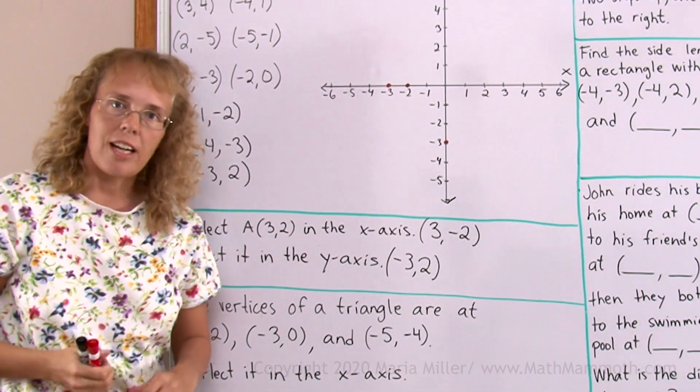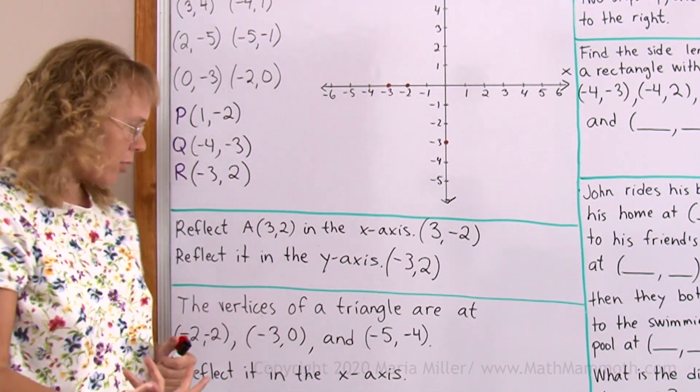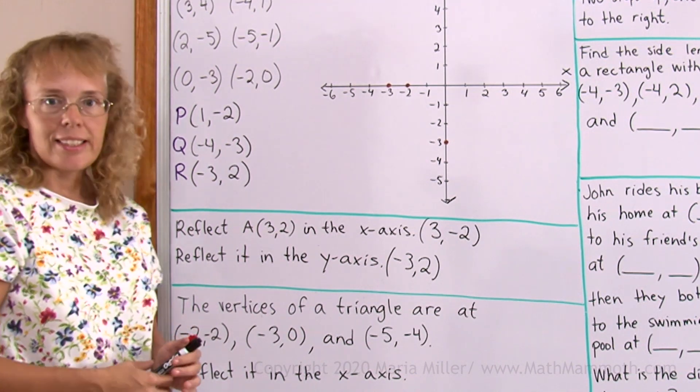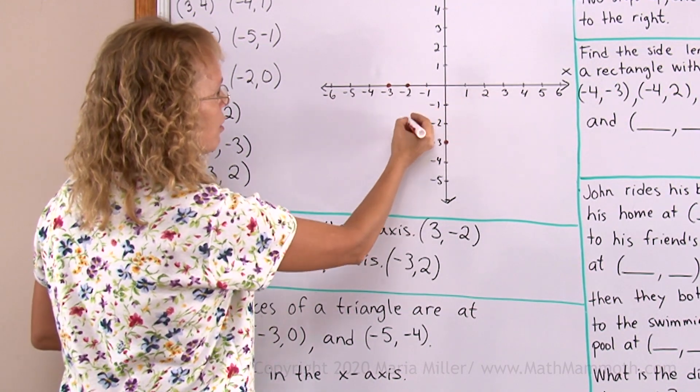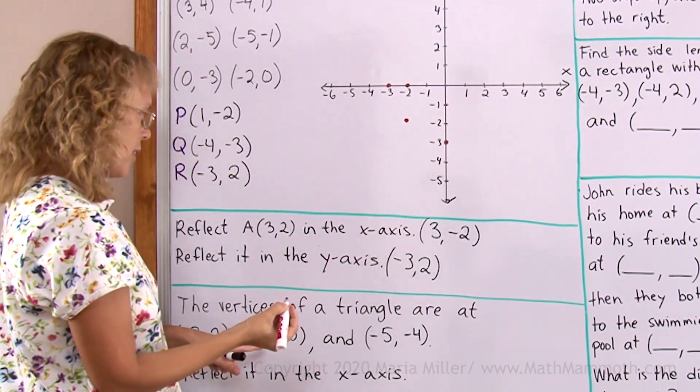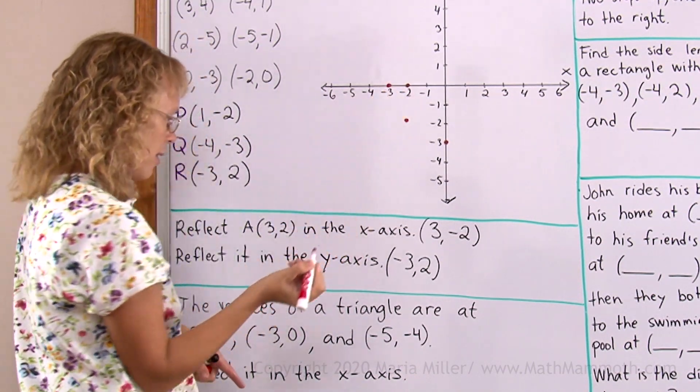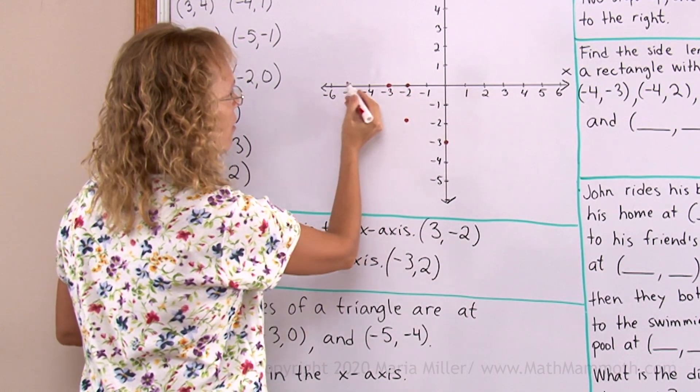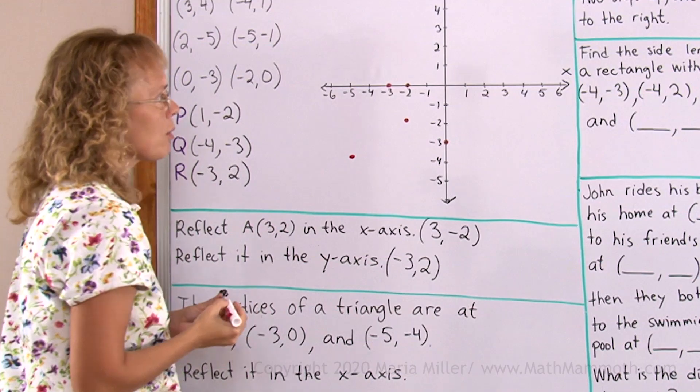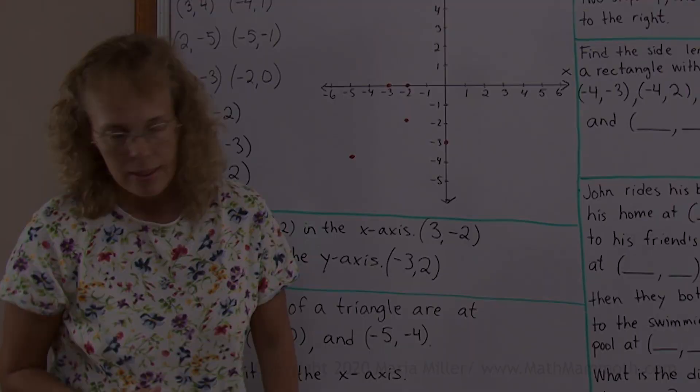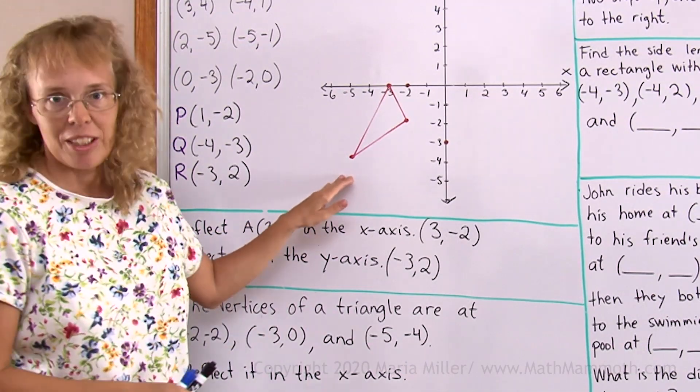The vertices of a triangle are at (-2,-2), (-3,0) and (-5,-4). Reflect it in the x-axis. Let's first plot those points. (-2,-2) would be here. Then (-3,0) is this one here. And then (-5,-4), -5 here and -4 there. So we get the triangle. Here's my triangle.